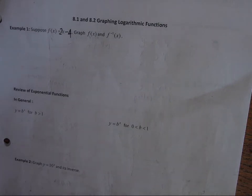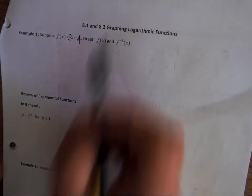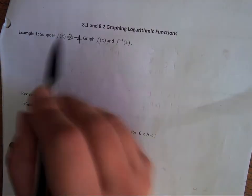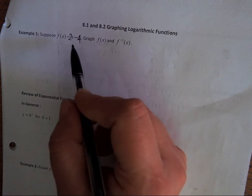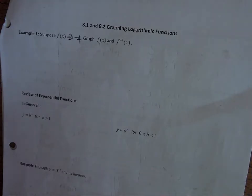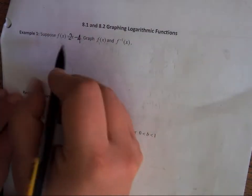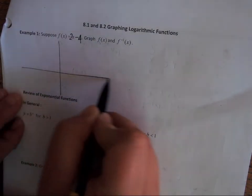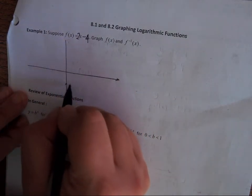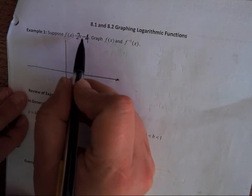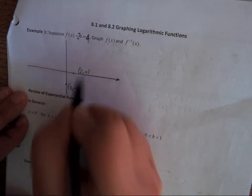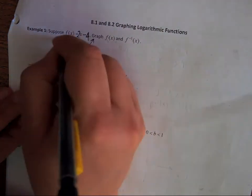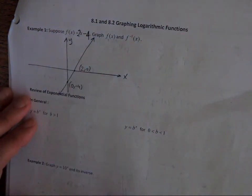We are going to look at graphing logarithmic functions. Before we do that, I want to remind you how to graph and get equations of inverse functions. So let's sketch f(x) = 2x - 4. The y-intercept is negative 4, so the point is (0, -4), and the x-intercept is 2, so the point is (2, 0). We can sketch this using these two points.